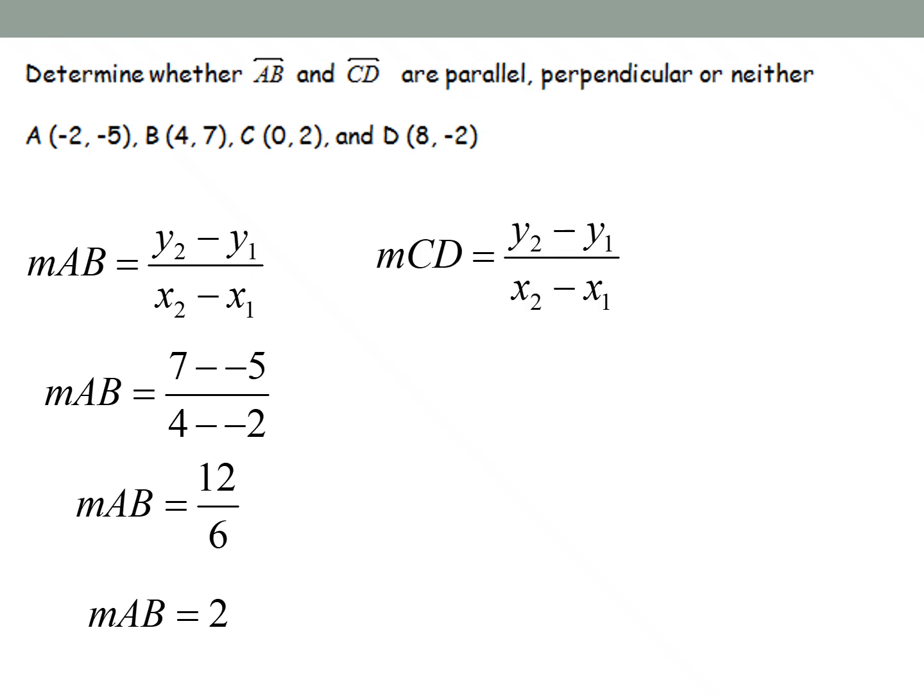And then you're going to do the same exact thing, but for points C and D. You're going to plug them into that slope formula, and then make sure that you keep your negatives in there. So it should be negative 4 over 8, which is 1 half. So as you can see here, these two slopes are negative reciprocals of each other, so therefore it is perpendicular.